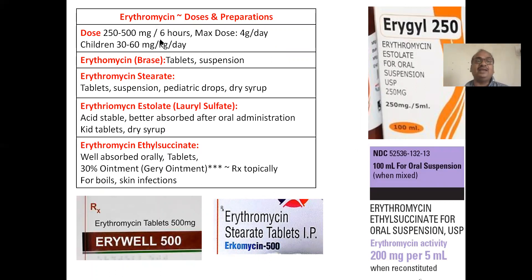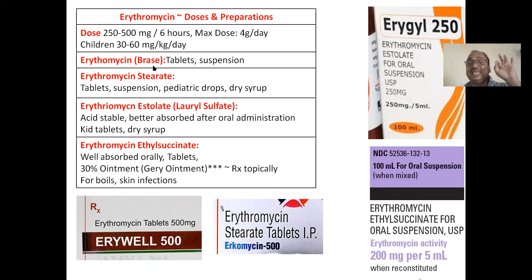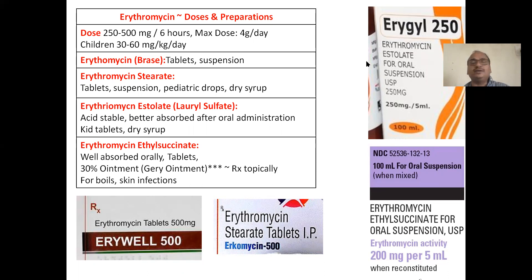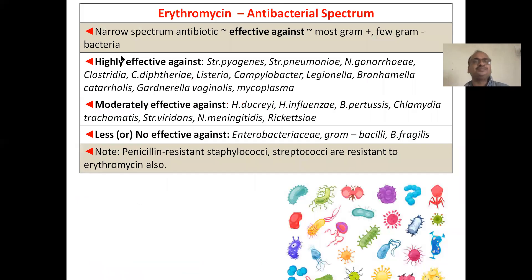Erythromycin dose: 250–500 mg per 6 hours; maximum dose is 4 grams per day; children's dose is 30–60 mg/kg/day. It is available in four forms: erythromycin base (tablets and suspension), erythromycin stearate, erythromycin estolate, and erythromycin ethyl succinate (for oral suspension).